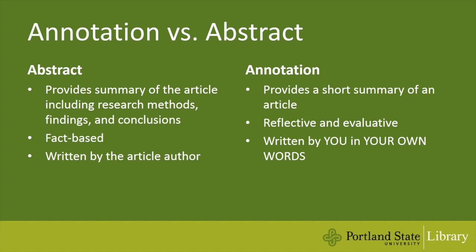The difference between an annotation and an abstract: an abstract is a summary of an article including research methods, findings, and conclusions — it is fact-based, offers no bias, and is written by the article author. An annotation, on the other hand, also provides a short summary but doesn't necessarily need to include the research methods, findings, and conclusions. Your annotation will be reflective and evaluative — it's an opportunity for you to think critically about the article that you read. Finally, the annotation is written in your own words.